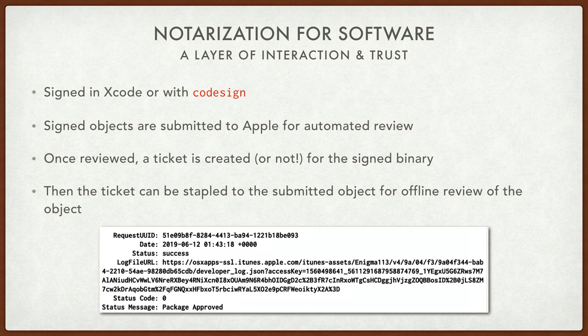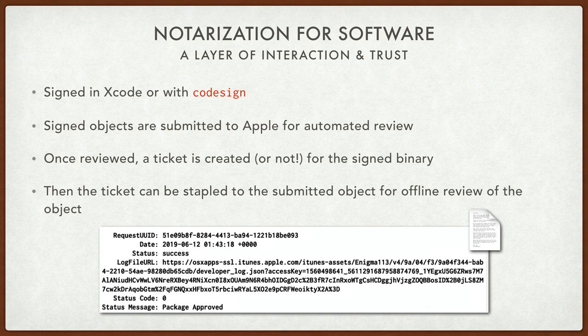Once the code is compiled, signed, and archived, the final product can then be submitted to Apple for automated review. All of the signatures are checked. All of the individual items inside the product are noted and reviewed. And then a ticket is returned to the developer for attachment to the product. A ticket is actually affixed that provides the certification to the user that this product wasn't just code signed with a valid certificate — it has passed an automated review that proves the code itself is built with a hardened runtime with only the entitlements required for the use of the software.